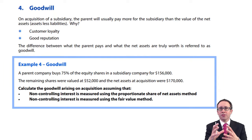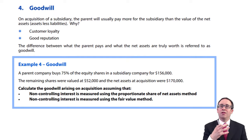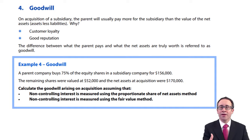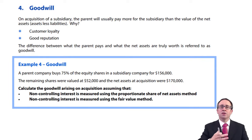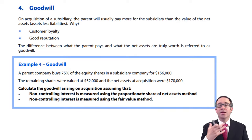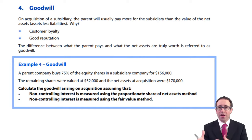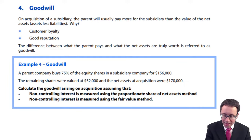Goodwill is going to be shown as an asset because it's what the group controls. We can measure it reliably because we know how much we're paying and how much the net assets are worth, so it can be recognized within the group statement of financial position. It is an asset — specifically a non-current asset — because it is going to provide benefits for longer than one year. So goodwill will appear as an intangible non-current asset in the group statement of financial position.